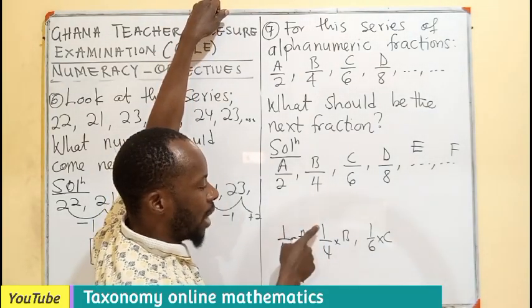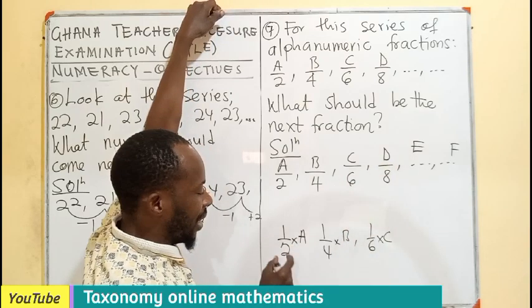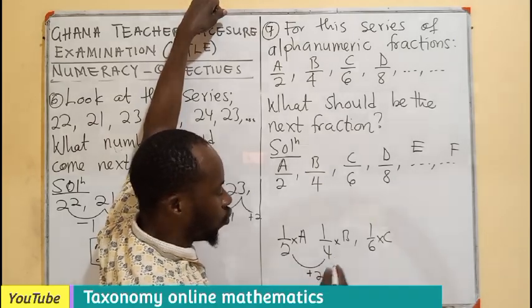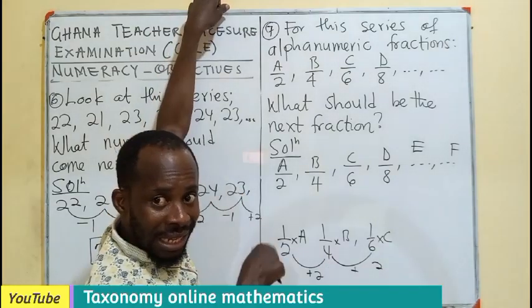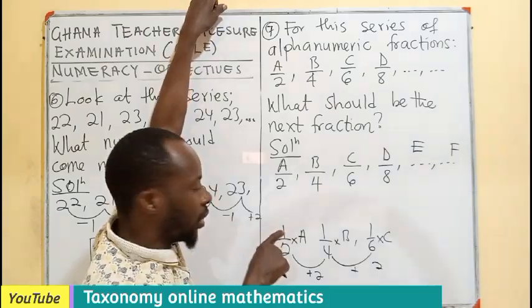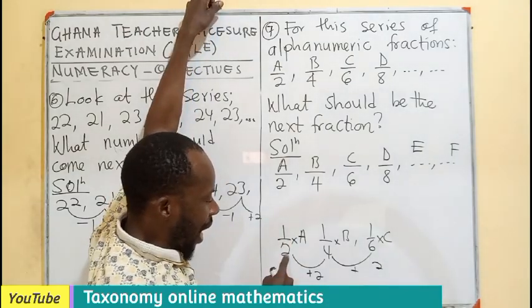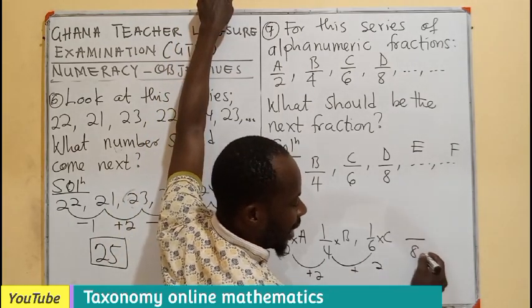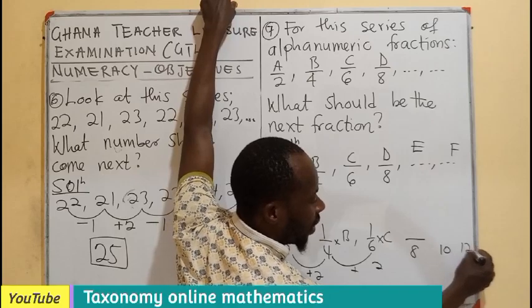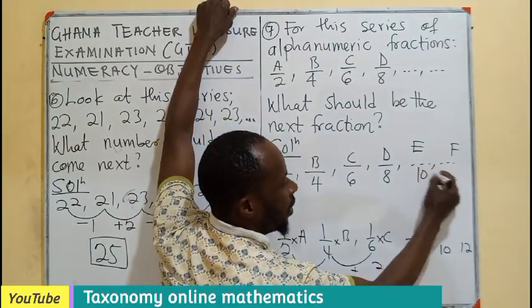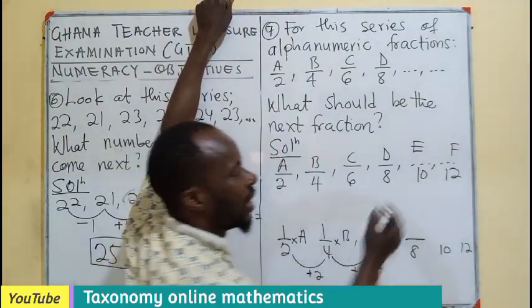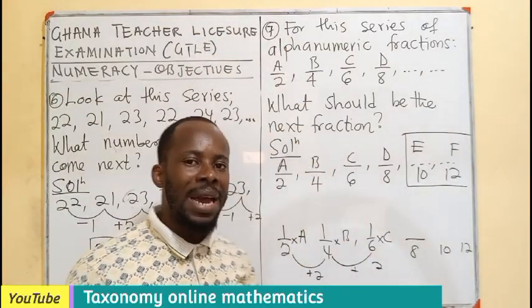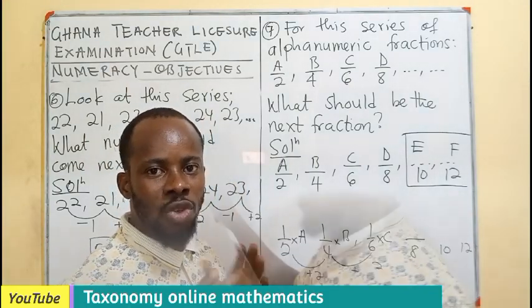So this is just 1, 1 in all of them. It is the denominator that we are increasing. I can see plus 2, plus 2 in terms of the denominator. The numerator remains the same. So we are adding 2. So the next one is supposed to be 8. The next one is supposed to be 10. Then obviously 12. So the next series we are looking for is e divided by 10, f divided by 12.